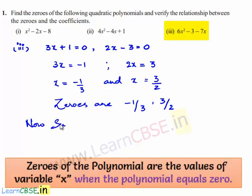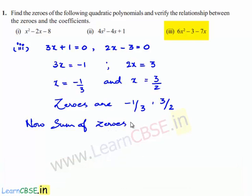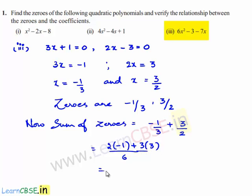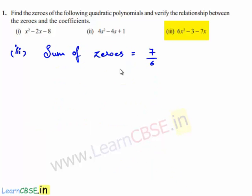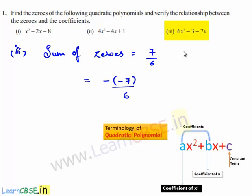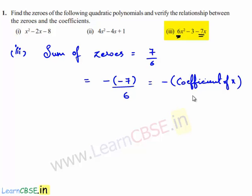The sum of the zeros is equal to minus 1/3 plus 3/2. Taking LCM as 6, this is equal to (2 times minus 1 plus 3 times 3) divided by 6, which is (minus 2 plus 9) divided by 6, which is 7/6. Sum of the zeros equals 7/6, which can be written as minus (minus 7) divided by 6. Here, minus 7 is the coefficient of x and 6 is the coefficient of x². Therefore, the sum of the zeros equals minus of coefficient of x divided by coefficient of x².